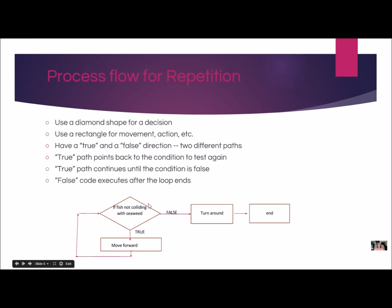Hopefully the condition is true when we first get started. I come to the true path and do whatever the instructions are, then loop back to the condition and check it again. If it's still true I keep going. Things can be happening in my ALICE world that make the condition true, but sooner or later the condition will be false — I stop the loop and go to any instructions that follow. Now if the condition is never false and always true, that's called an infinite loop, and that's something you usually want to avoid.